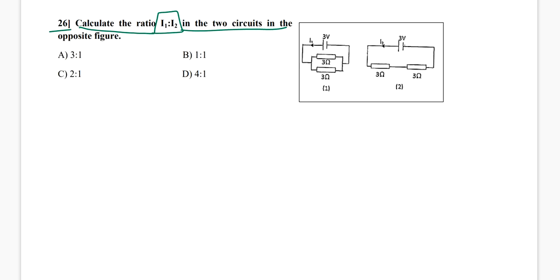So I need I1 by I2. First of all, I need to find I1 here. I know that I1 equals V by R. V I have it, 3R, it must be the total of these two. So let's find R equals 1 by 3 plus 1 by 3, which equals 1.5.